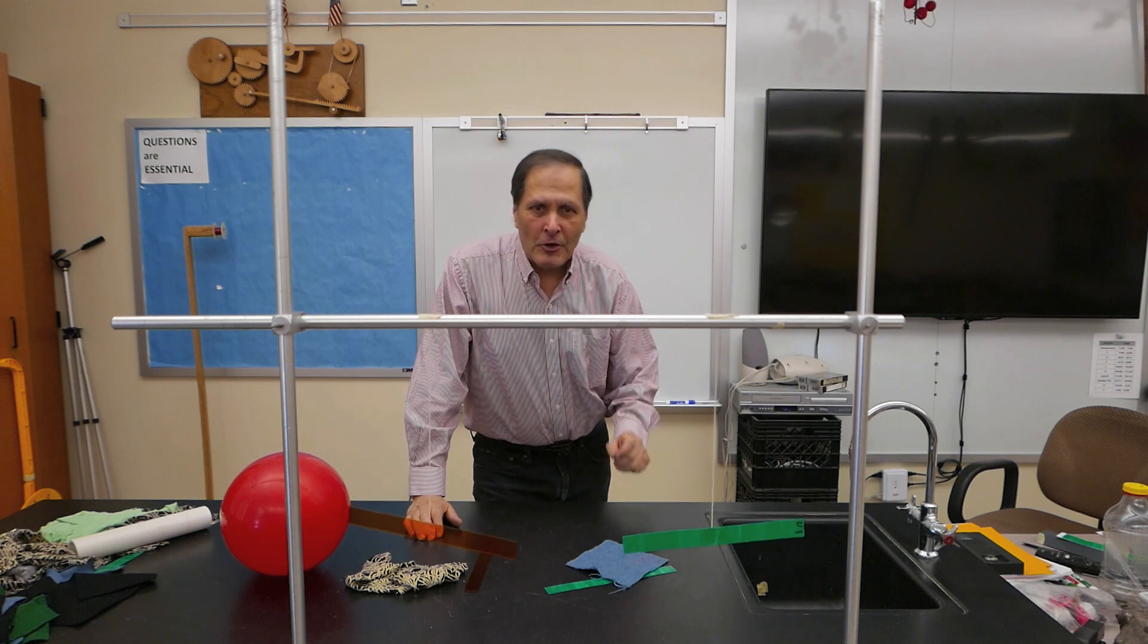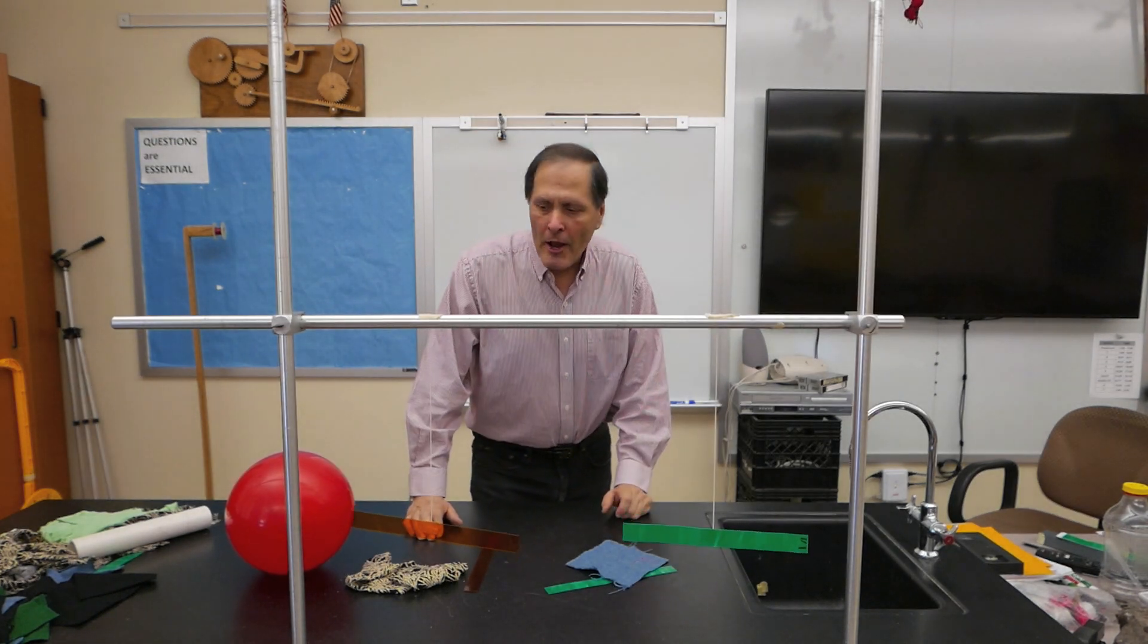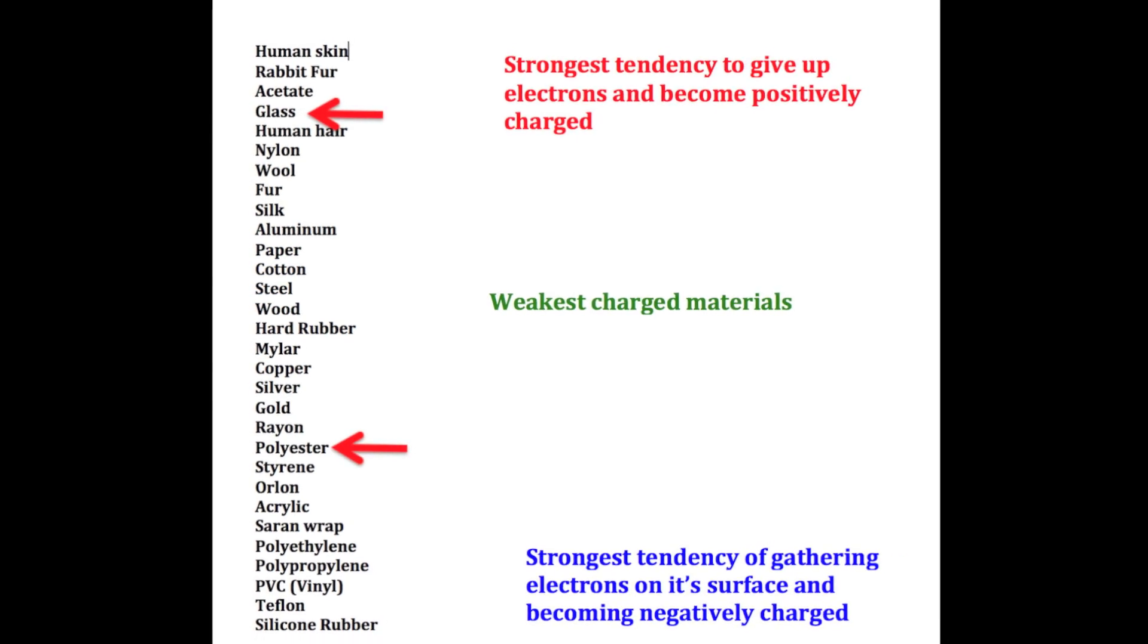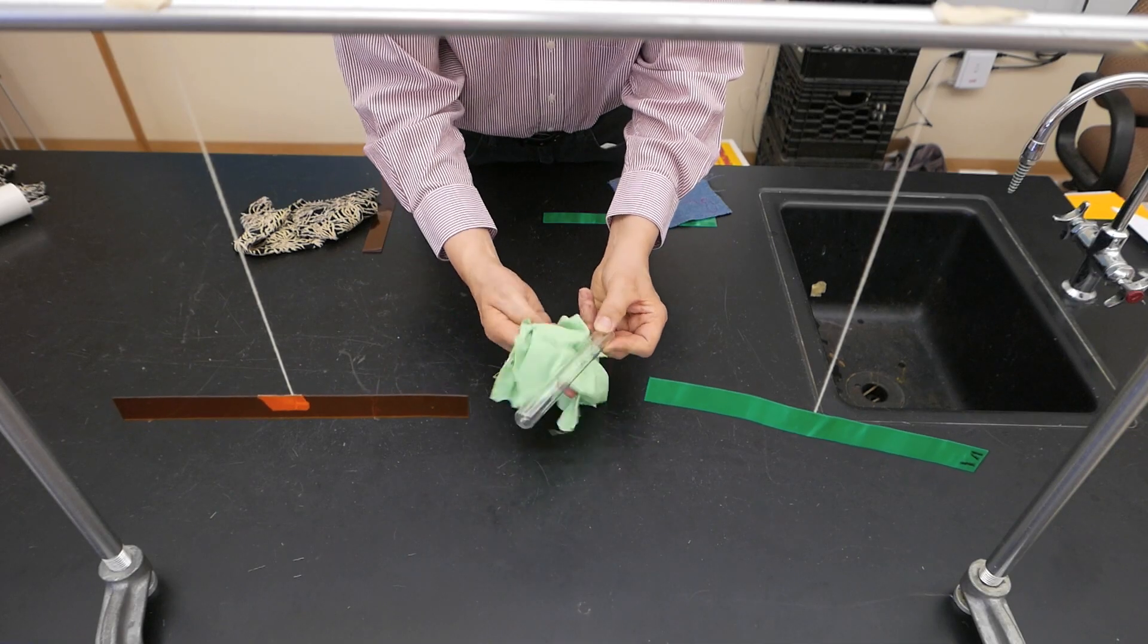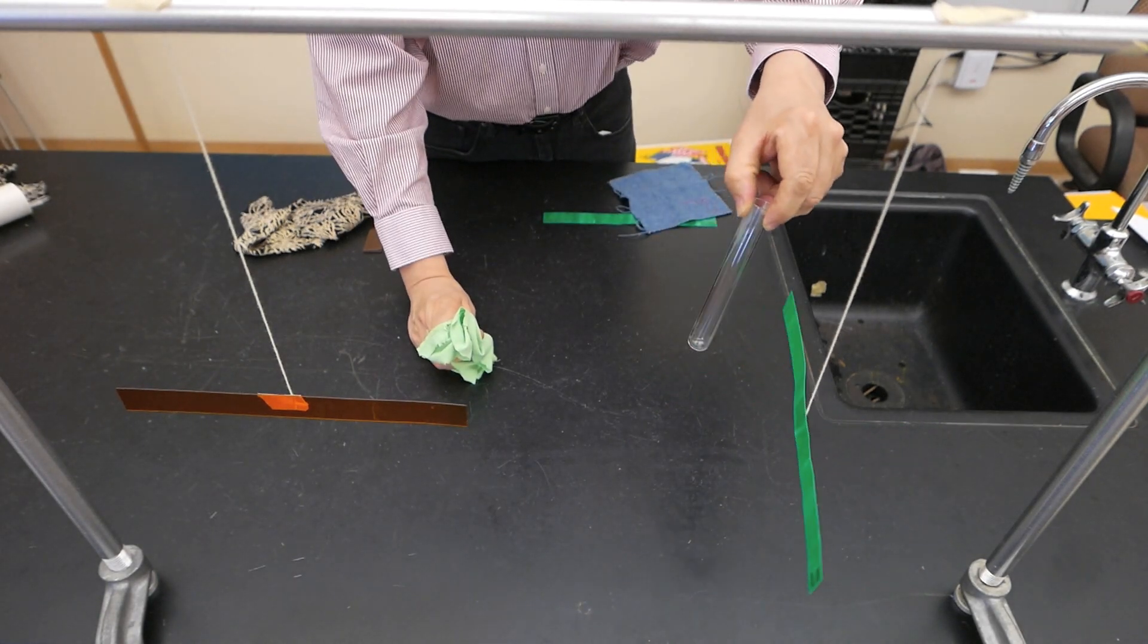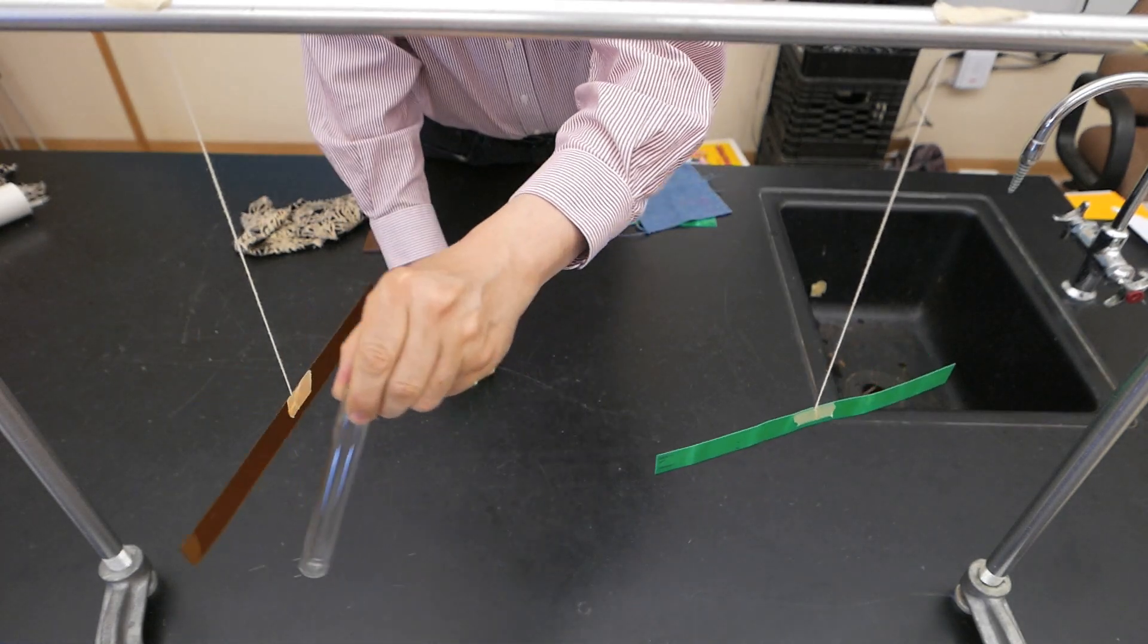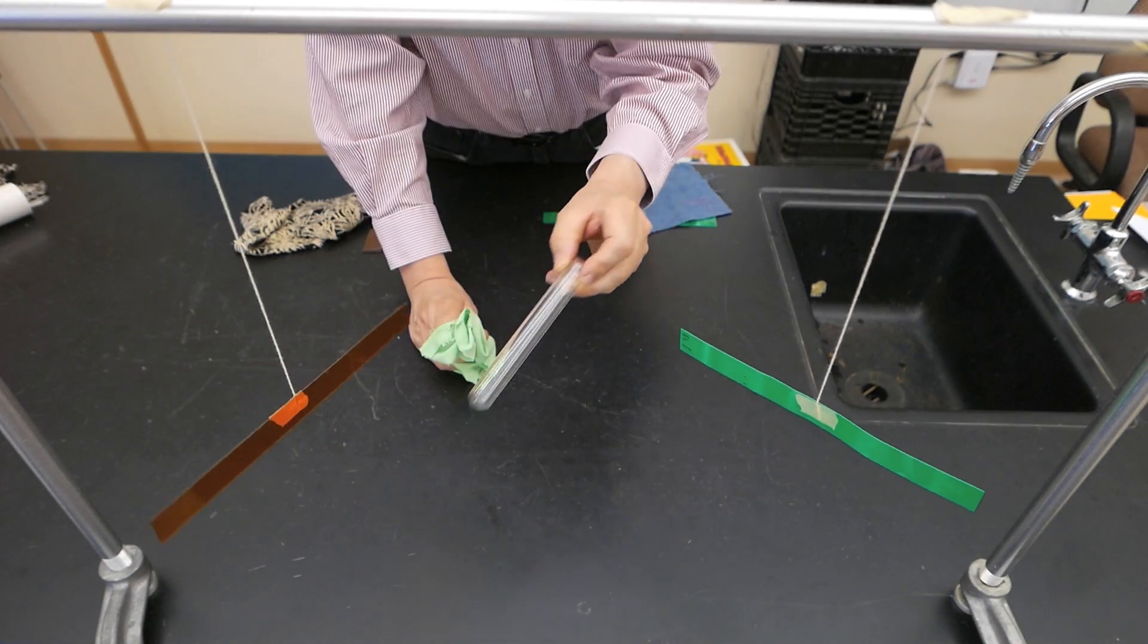Now that we've established our charges, we can try other materials on that table and see if they behave the same way. My next test is going to be glass and polyester. In this case I'm going to use a test tube and rub it with a piece of polyester cloth. It attracts the negative charge and it repels the positive charge. Therefore the glass must be positively charged.